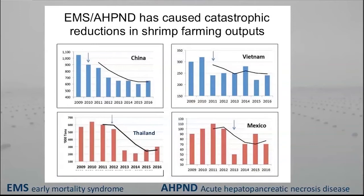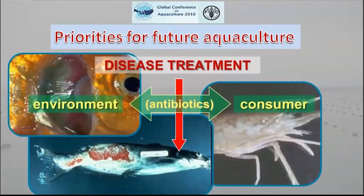In the meantime, people have seen that a number of other Vibrios can result in the same disease, so we could call it a Vibriosis. About ten years ago, at the last global conference on aquaculture organized by FAO — the next one was scheduled for 2020 but will take place in September of this year in Shanghai — aquaculture priorities for the future were discussed.